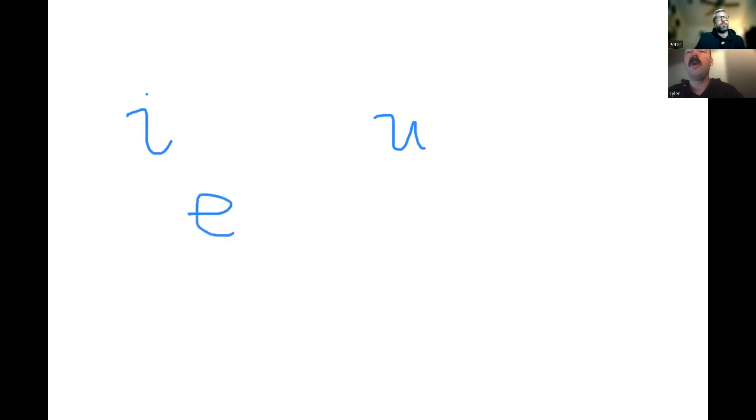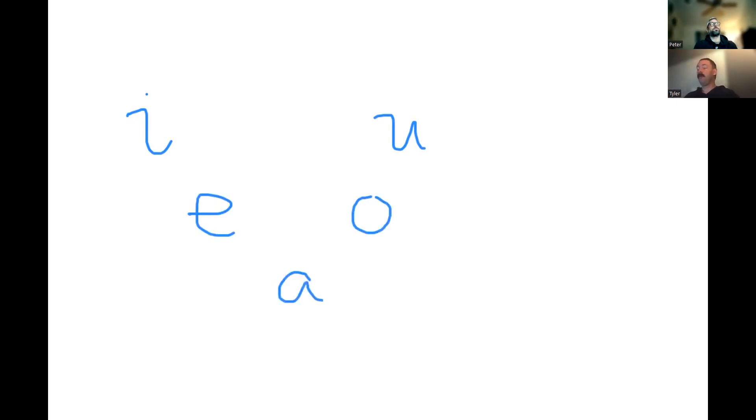It uses the same alphabet that English uses, and it looks like we have five vowels in Ganoqa. I, U are high vowels — we just have to assume they have the usual values. E, O are mid vowels, with the mouth slightly more open. And we have A at the bottom.